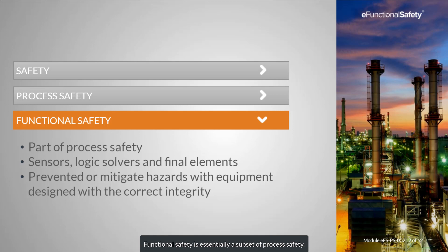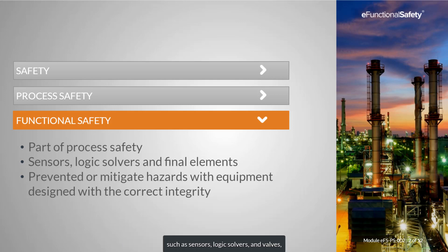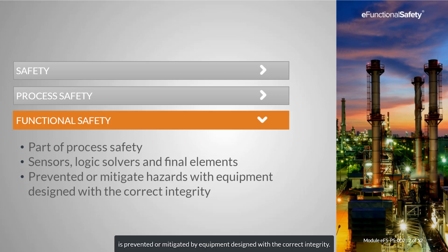Functional safety is essentially a subset of process safety. When hazards occur, the correct operation of automated equipment such as sensors, logic solvers and valves should bring the process to a safe state. Functional safety principles ensure that each hazard is prevented or mitigated by equipment designed with the correct integrity.